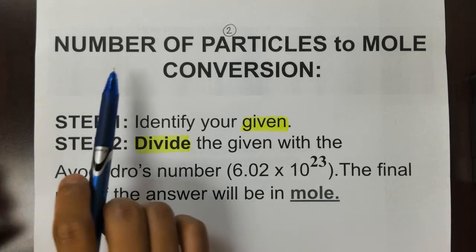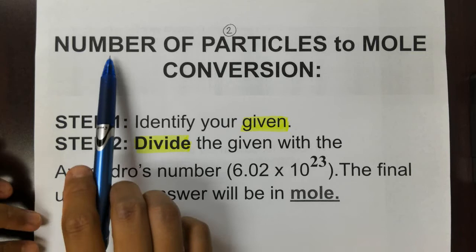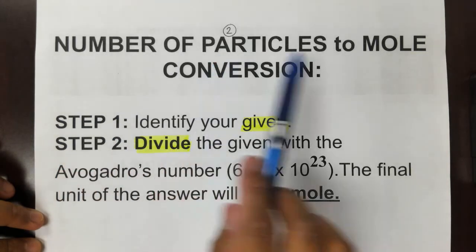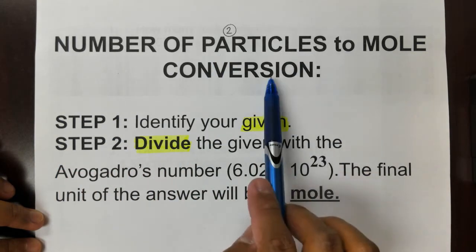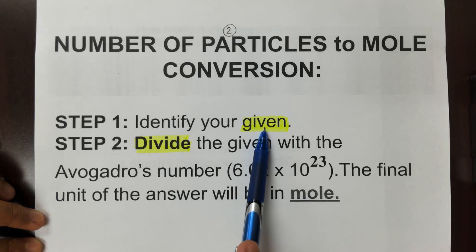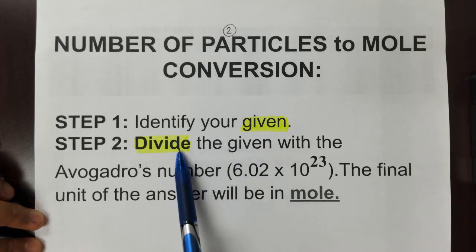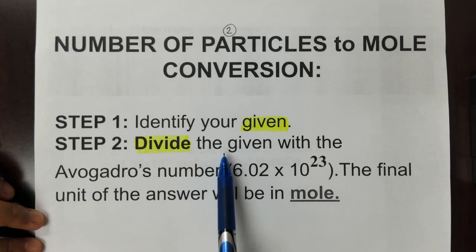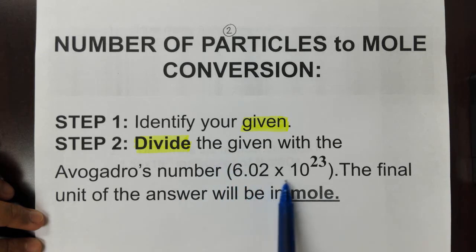Okay, so in this case we're now going to convert from the number of particles and make it into a mole conversion. There are two steps that we're going to do only for this type of conversion problem. We are going to identify the given and write it down, and after that we are going to divide the given with our Avogadro's number value.